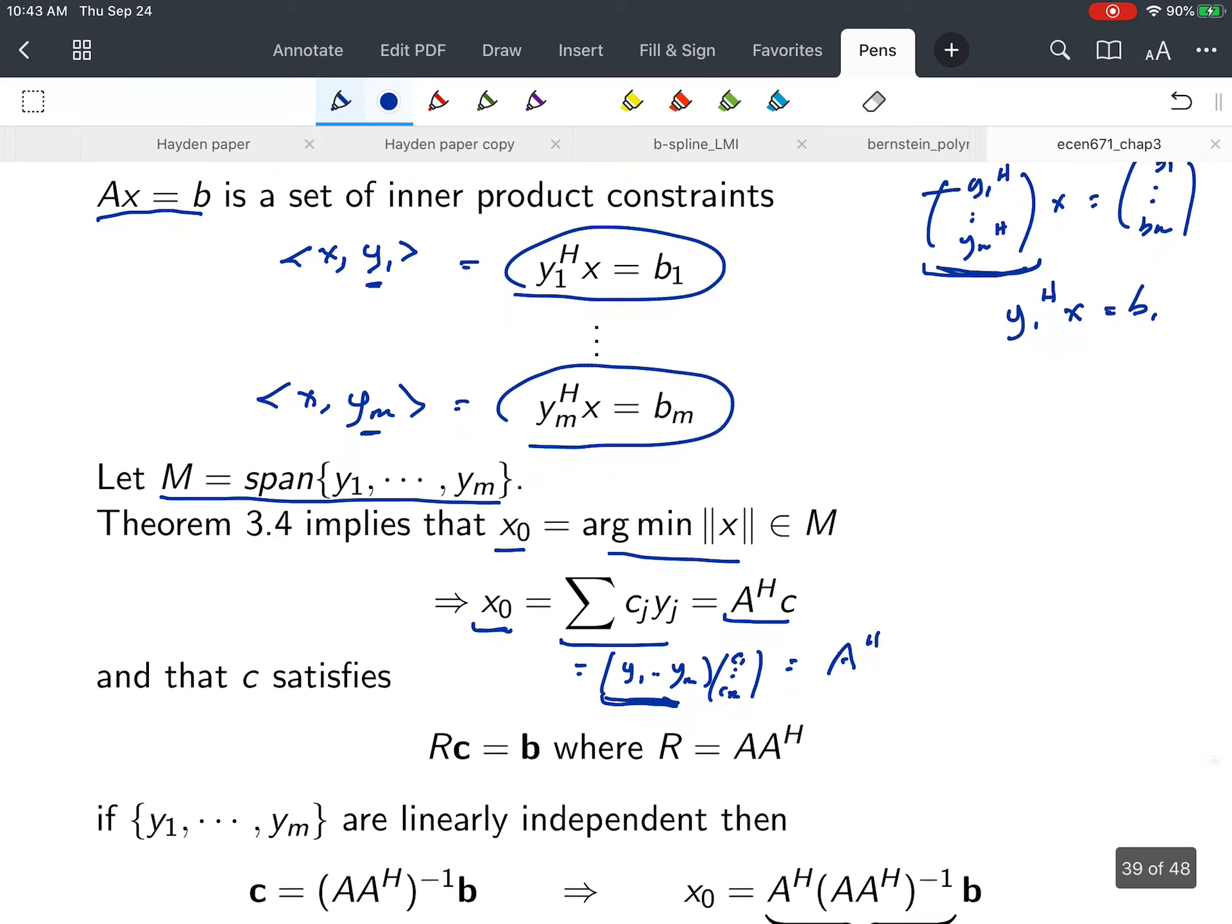If we write out the Grammian, we can express it as R equals A^H A. This gives us the matrix with entries y_i^H y_j, which is just the inner products ⟨yᵢ, y_j⟩. That's our standard Grammian matrix.